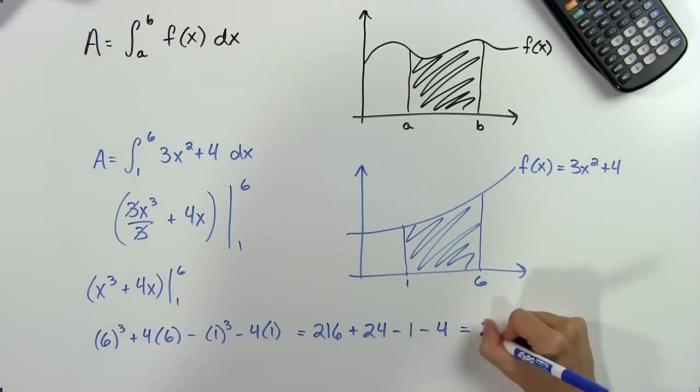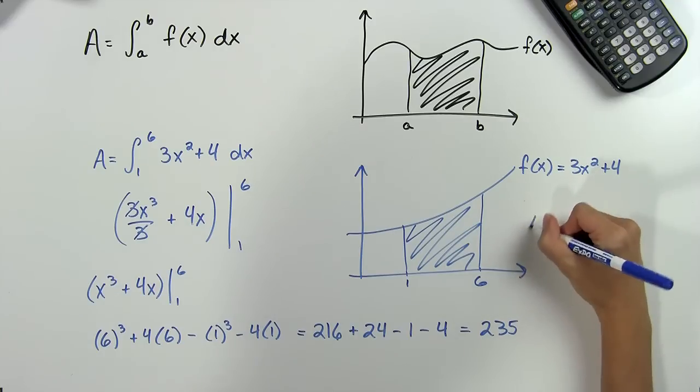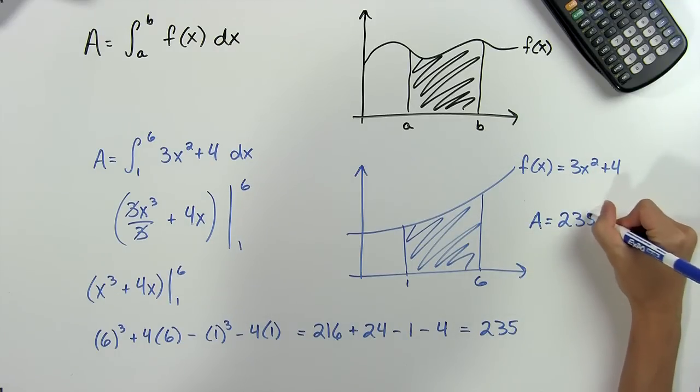And when we add this all up, we get 235. So that tells us that the area of this shaded region is equal to 235 units.